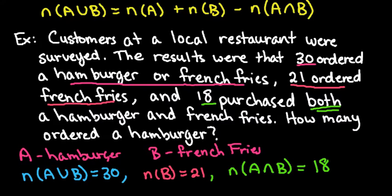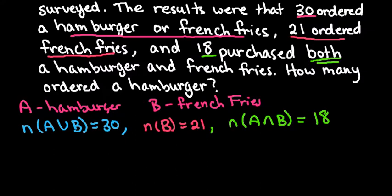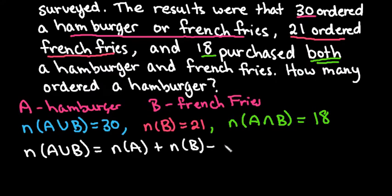And now it's going to ask how many ordered just a hamburger. Okay, so what we're going to do is we're going to use the rule. I'm going to go ahead and write the formula down again since it's off of my screen now. So we would say that the number in A or B is equal to the number in A plus the number in B minus the number in both A and B.